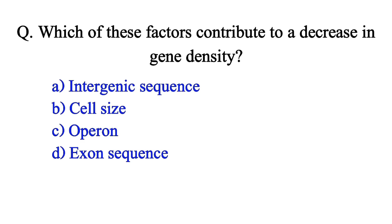Which of the following factors contribute to a decrease in gene density? Option A: intergenic sequence. Option B: cell size. Option C: operon. Option D: exon sequence. The correct answer is Option A: intergenic sequence.